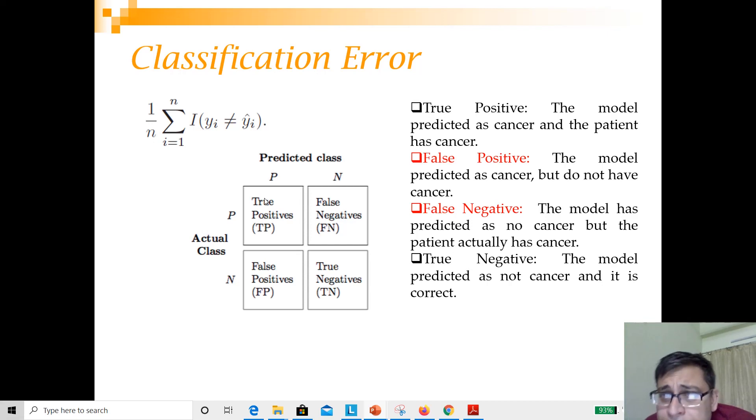Let's understand this with an example. Say you are trying to detect whether a patient has cancer or not. From medical test terminology, if you have cancer then the test result is positive. When you say true positive, that means the patient has cancer and you predicted it as cancer. False positive would be the model predicted cancer but they don't have cancer. False negative is the model predicted no cancer but the patient actually has cancer. True negative is the model predicted not cancer and it is correct.